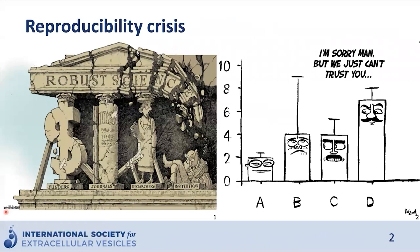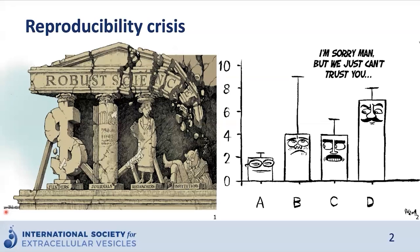Researchers continuously publish new discoveries and new results, and that's really good because new publications and new research motivate further research and also inspire new products. If we talk about products, we could, for example, think about treatments for cancer. But that also means it's really important that we have confidence and trust in the data and results that are published.